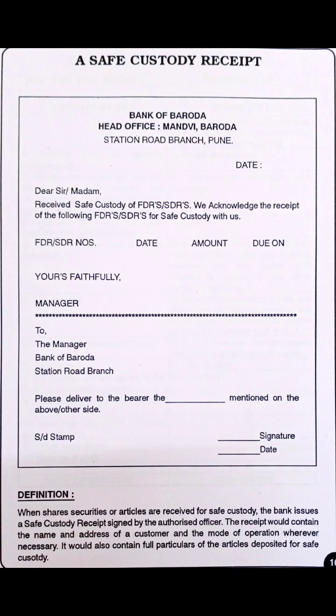Next is the safe custody receipt. Same format — write the bank name, address below it, and date always on the right-hand side. Then 'dear madam/sir' on the left. Write 'receive safe custody of FRD/SRD and we acknowledge the receipt of the following for safe custody with us,' then the number, date, amount, and due date. Sign off 'yours faithfully, the manager.' On the left side start 'to the manager, Bank of Baroda, station road branch' and 'please deliver to the bearer — mentioned on the above side.' A stamp on the left and signature on the right.